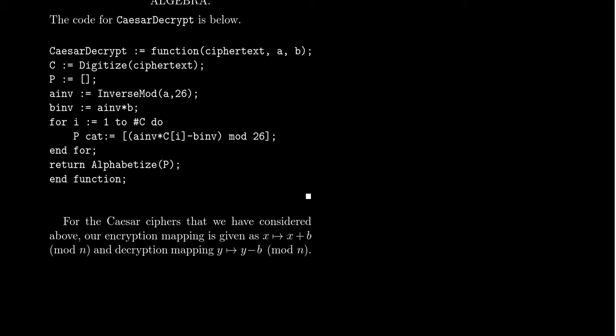If the encryption process is compromised — say an enemy learns the details through interrogation — all past encrypted messages are vulnerable. Future messages can be protected by switching the encryption key, not the method. Critically, the security of a reliable crypto system must not rest on keeping the encryption method secret, but on the key itself. If the method is the secret, eventually it will leak. Alice and Bob should assume Eve knows they're using a Caesar cipher; the security must lie in the key.